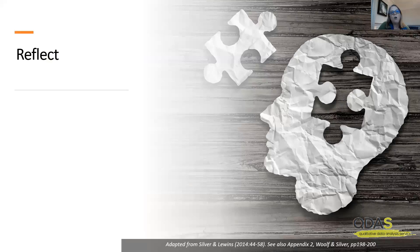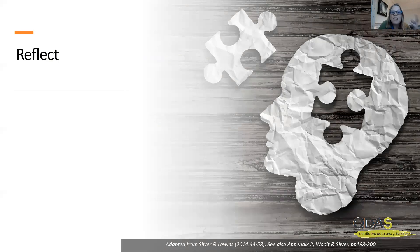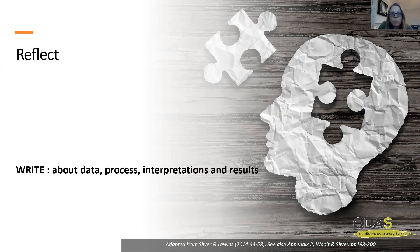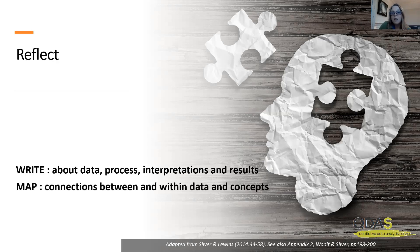Then we have the analytic activity of reflecting. In qualitative and mixed methods projects, we all do this all of the time, so this is really about how we capture those reflections — how we get the interesting and meaningful things we notice out of our head so that we can remember them, build on them, and incorporate them as we go through the process. There are two key ways: first, by writing — about the data themselves, the processes we're employing, the interpretations we're generating, and the results later on. But we can also capture reflections by mapping: drawing diagrams that reflect or capture the connections between and within our data and the concepts that we're working with.